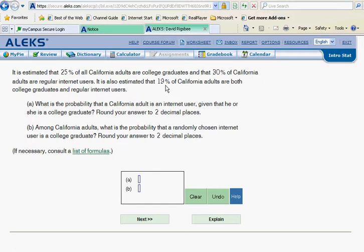Now we get into the questions. What is the probability that a California adult is an internet user given that he or she is a college graduate? And then in part B, among California adults, what is the probability that a randomly chosen internet user is a college graduate? They ask us to round to two decimal places.